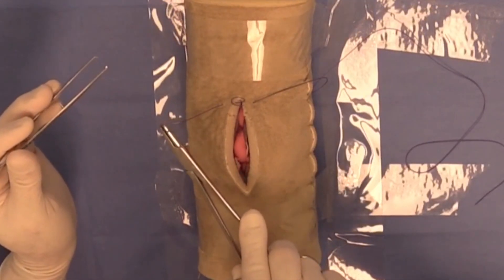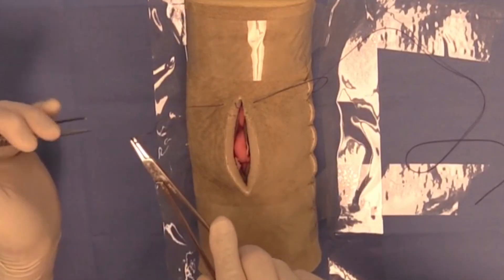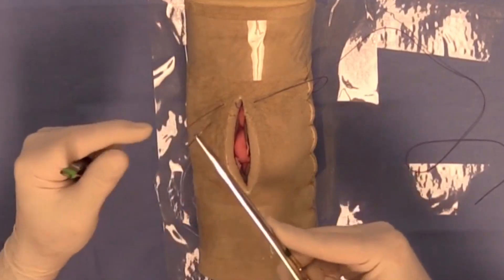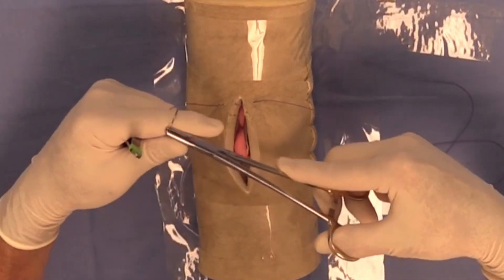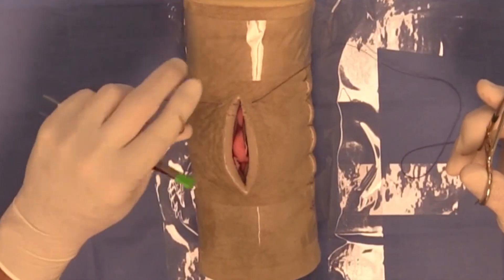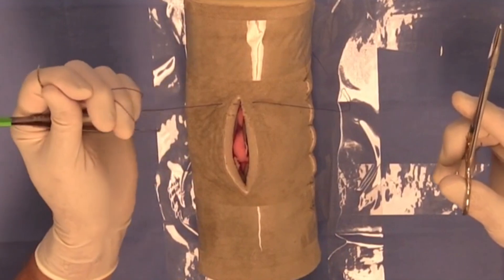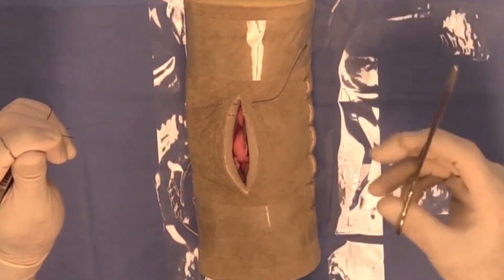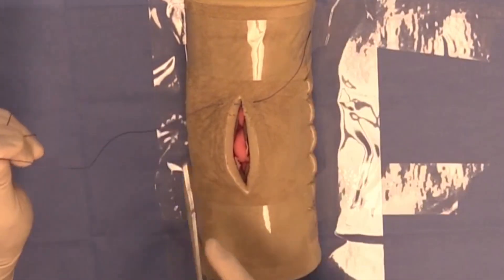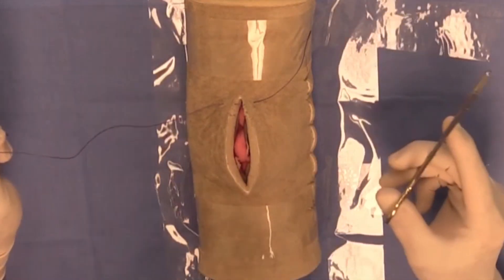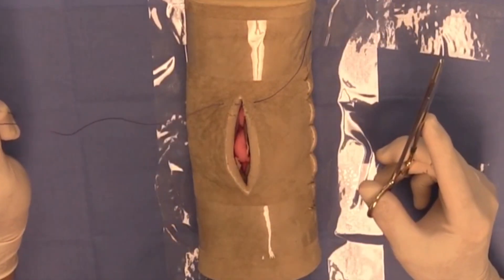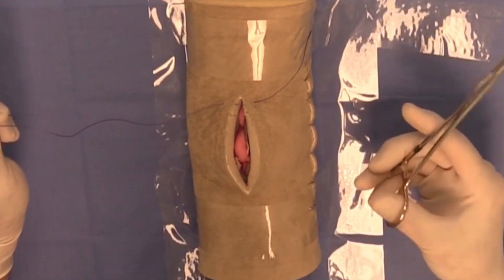For the second bite of my suture pattern, I'm going to grasp that needle. Now I'm going to gather my suture - there are various gathering techniques that you can use. You want to leave yourself a fair amount of suture with which to complete your knot for this simple interrupted suture pattern.